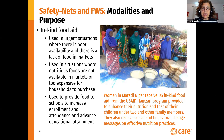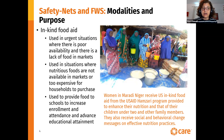The first example is in-kind food aid. It's used in urgent situations where there is poor availability — meaning food is lacking in the markets and farmers are not producing food for various reasons — so it's necessary to bring in food from other countries to save lives. Food is used in situations where nutritious foods are not available in markets or too expensive for household purchase. There is a way of testing whether nutritious foods are sufficiently available in markets and whether they can be purchased by the people you most want to address the nutrition of.